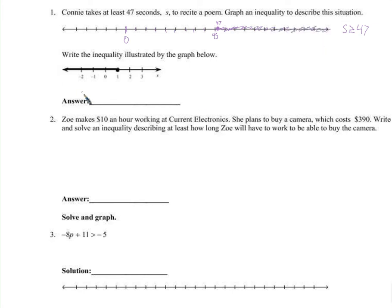Part two: write an inequality illustrated by the graph below. That would be all of the values — the numbers that are less than or, because this is filled in, equal to 1. So x is less than or equal to 1 does the trick.